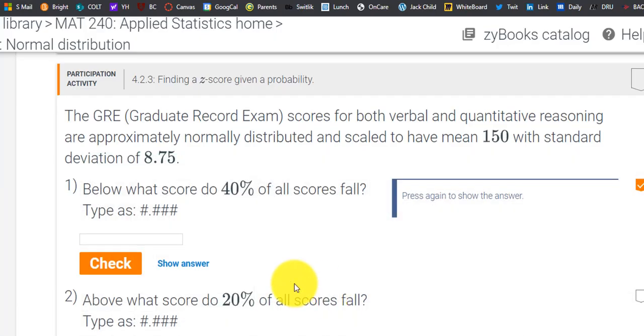And we want to know below what score do 40% of all the scores fall. So what's the value here? And it looks like we have to go to three decimal places.